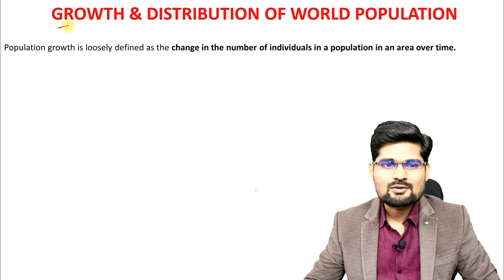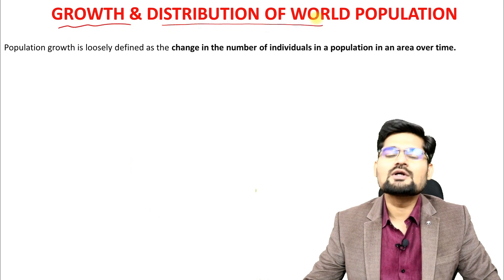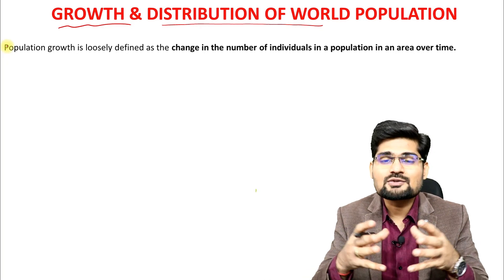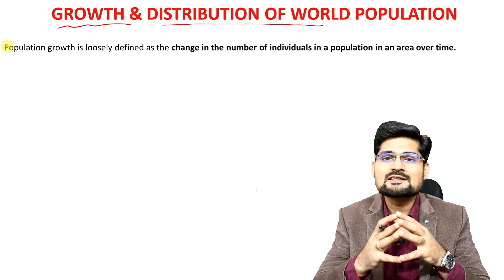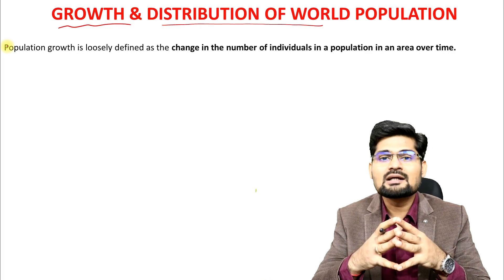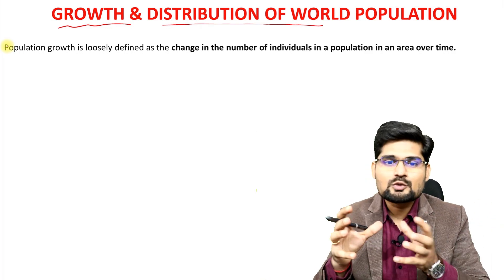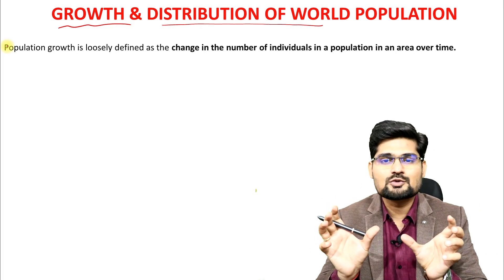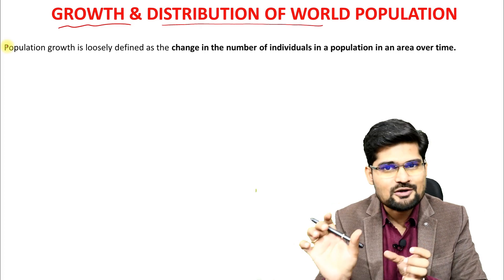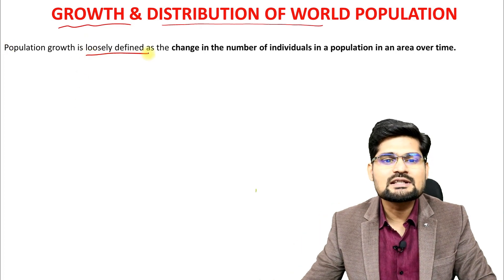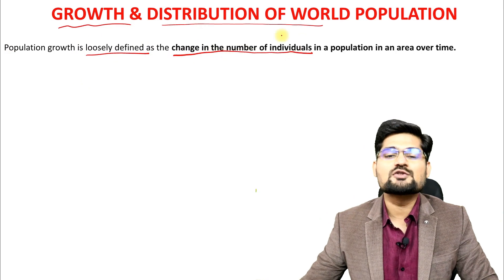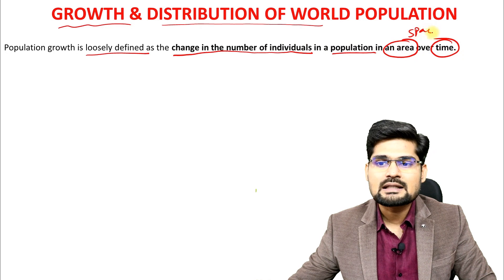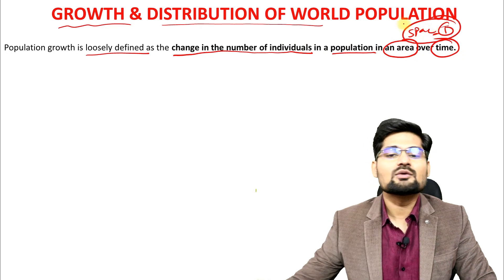Now let's discuss about the growth and distribution of world population. When I say growth and distribution, it is essentially understood that in population geography, the first part is quantitative in nature, and the second part is the distribution in terms of space and time. So we say that demography together with this distribution forms the core aspects of population geography.